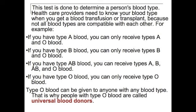Extrapolating to the Rh factor: a person with type A positive blood can receive a donation from a person with A negative blood; however, a person with A negative blood cannot receive blood from an A positive donor. Only people with the positive blood group can receive both positive and negative blood types, and only people with a negative blood type can receive other negative blood types that are compatible with their blood.